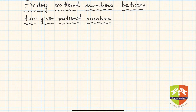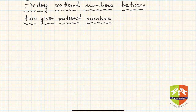Hello friends, I welcome you all in this session on number system. This particular session is dedicated towards finding rational numbers between two given rational numbers. You have learned about rational numbers and we have given you the definition and the criteria of rationality. Now in this session we are going to understand what to do when two rational numbers are given.